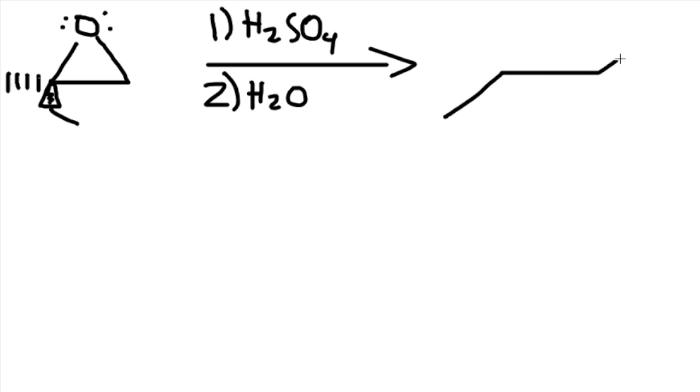So we would have the ring open, so we have OH here, we would have this methyl over here, a dash up there, and OH right here.